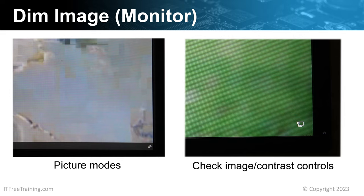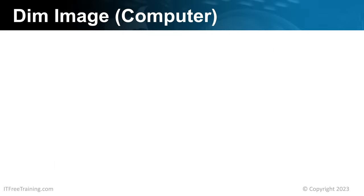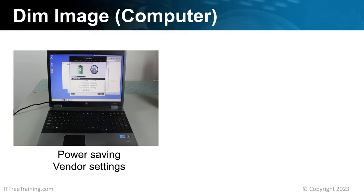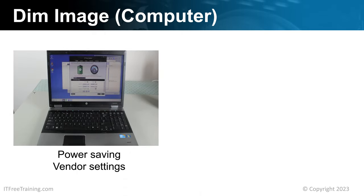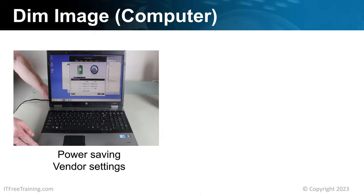That covers the settings for the monitor, but the image can also be affected by the settings on the computer. It is very common in the case of laptops to have power saving settings. When you unplug the laptop, the screen gets dimmer — this is an indication that power saving has been enabled. When in power saving mode, the laptop will run longer using battery power than if the screen was set to full brightness. When you plug the power back in, the screen returns to full brightness again.